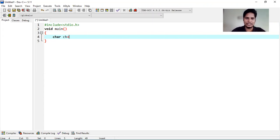Let's see, char ch is equal to in single quotation. I'm sending p.